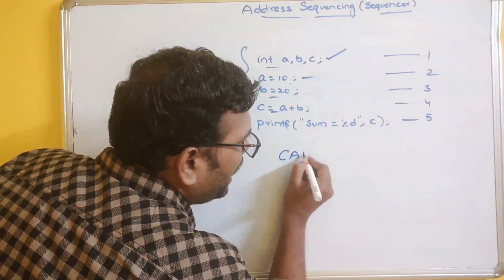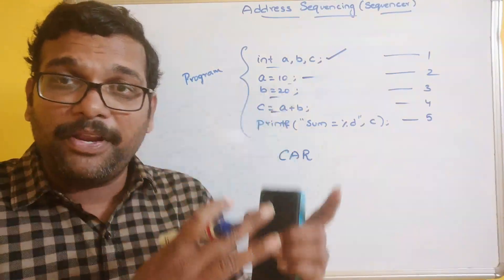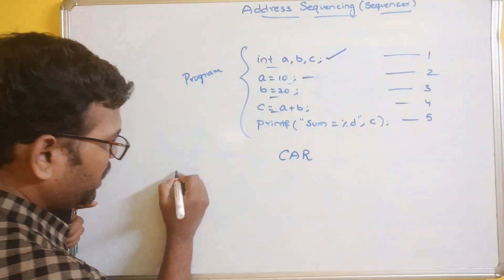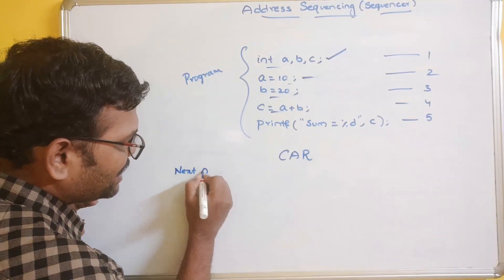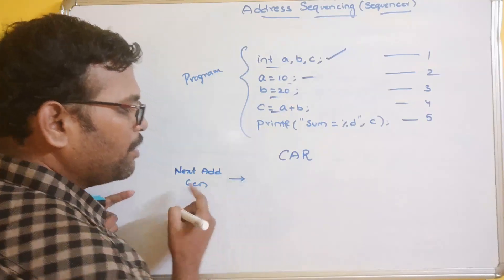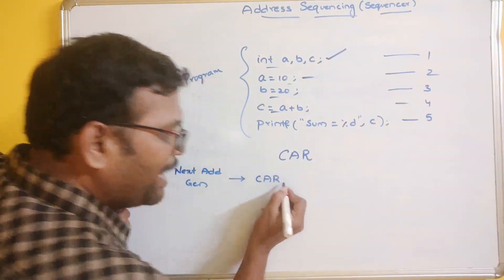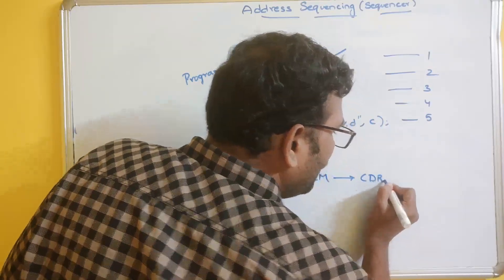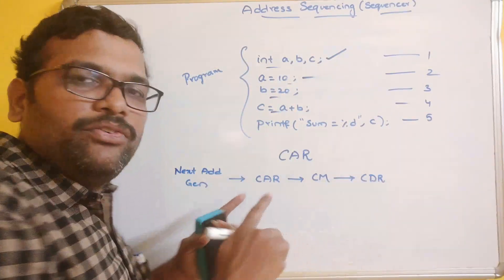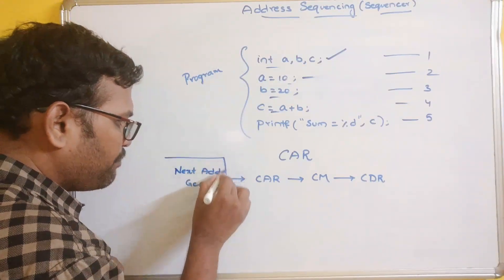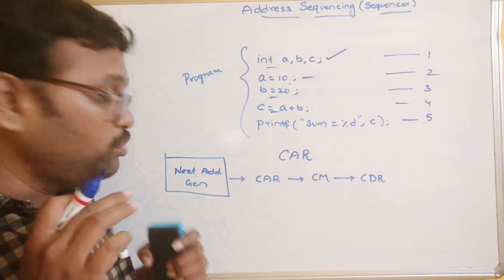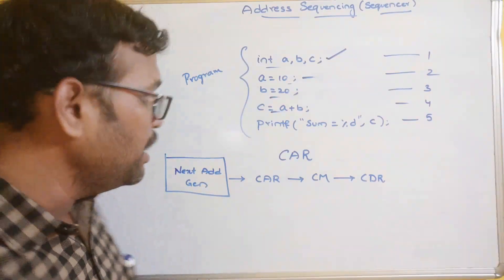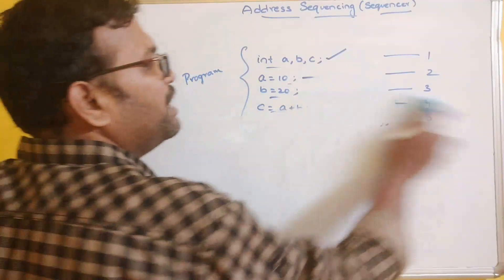The address of all these instructions will be available in the control address register (CAR). In our previous session we saw the complete diagram of the microprogrammed control unit, where the first block is the next address generator. From here the address is loaded into the control address register, then the instruction is fetched from control memory into the control data register. Our session now focuses on how to generate the next address of the next instruction, which is done using four different approaches.